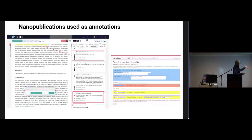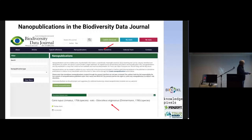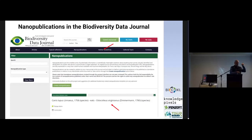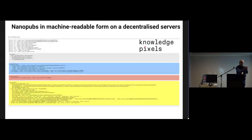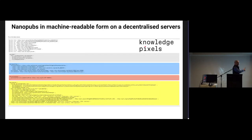An example of the human-readable form of a nanopublication shows species with their ranks, names, and concepts taken from the Catalog of Life with their identifiers. It also uses the Relation Ontology, so everything is based on identifiers from external, trusted, and hopefully permanent resources. Behind this simple statement there is a lot of computer-readable metadata about namespaces, ontologies, and identifiers used — users don't see that, but it exists.